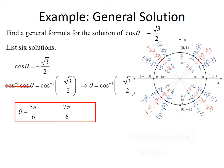But remember, any revolution around the circle will generate a new angle that also has that same cosine value. So to make this a general solution, we'll add 2πk to both of our solutions. Here 2π represents a revolution, and k represents the number of revolutions. Each time we make a revolution around the unit circle, we get a new angle that satisfies cosine equals negative root 3 over 2.